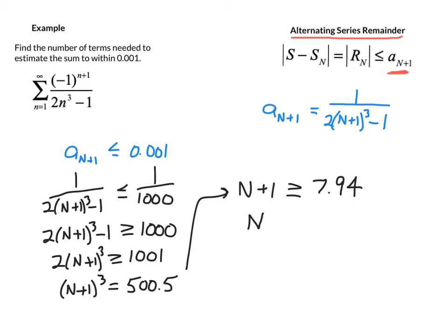Our value of n, the number of terms that we need to have this estimate be within 0.001, is greater than or equal to 6.94. And you have to remember that n is an integer, always, when we're talking about series. So we round that up, and that tells us that we need a total of 7 terms in order to come up with the desired accuracy on our estimate.